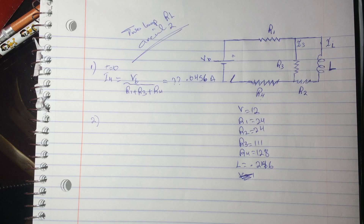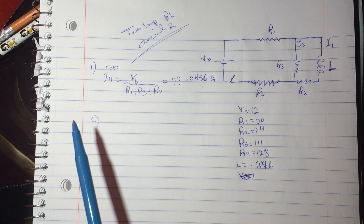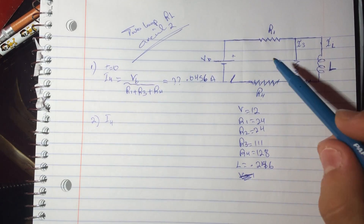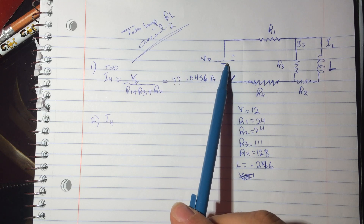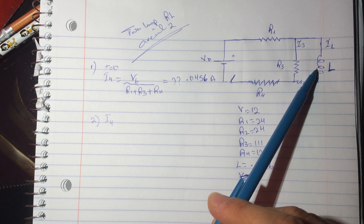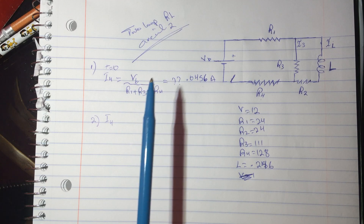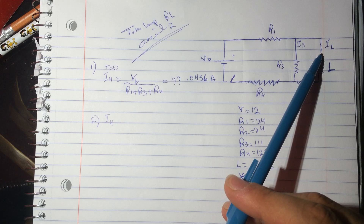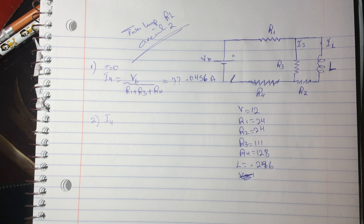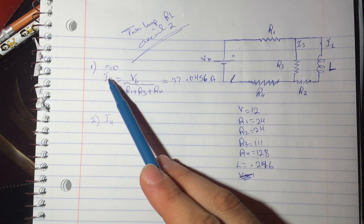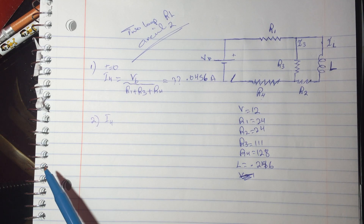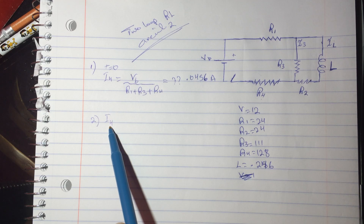Question two: what is I4 at infinity? Over time the inductor starts acting like a wire — it doesn't like rapid changes in current, so it induces a current that opposes the change. That's why at t=0 it acts like a large resistor, and we ignored R2 in that calculation.